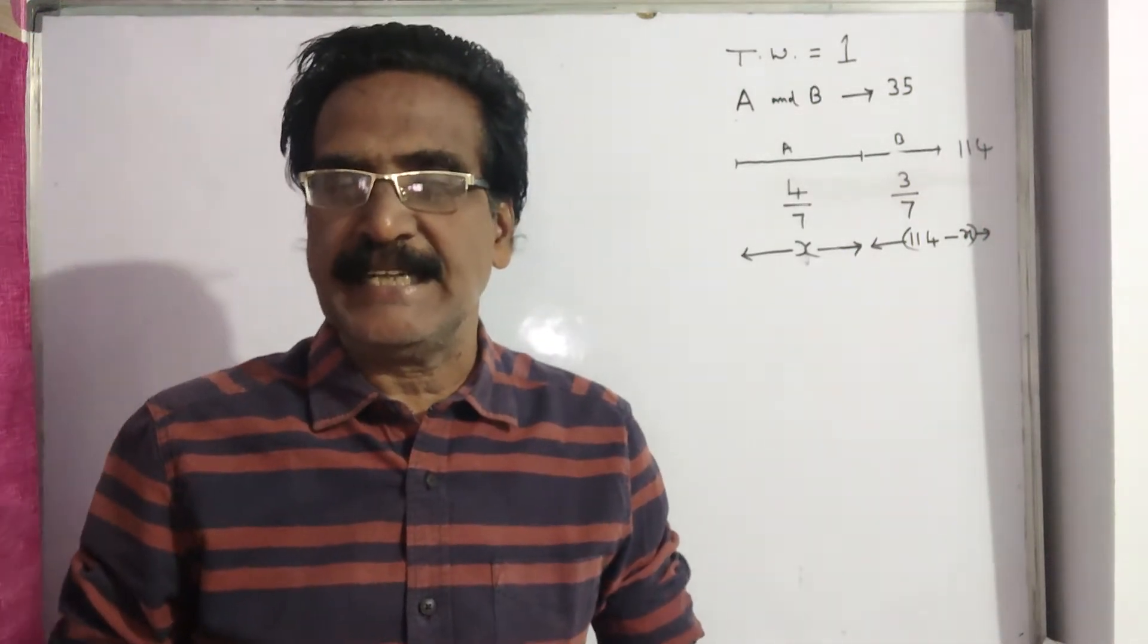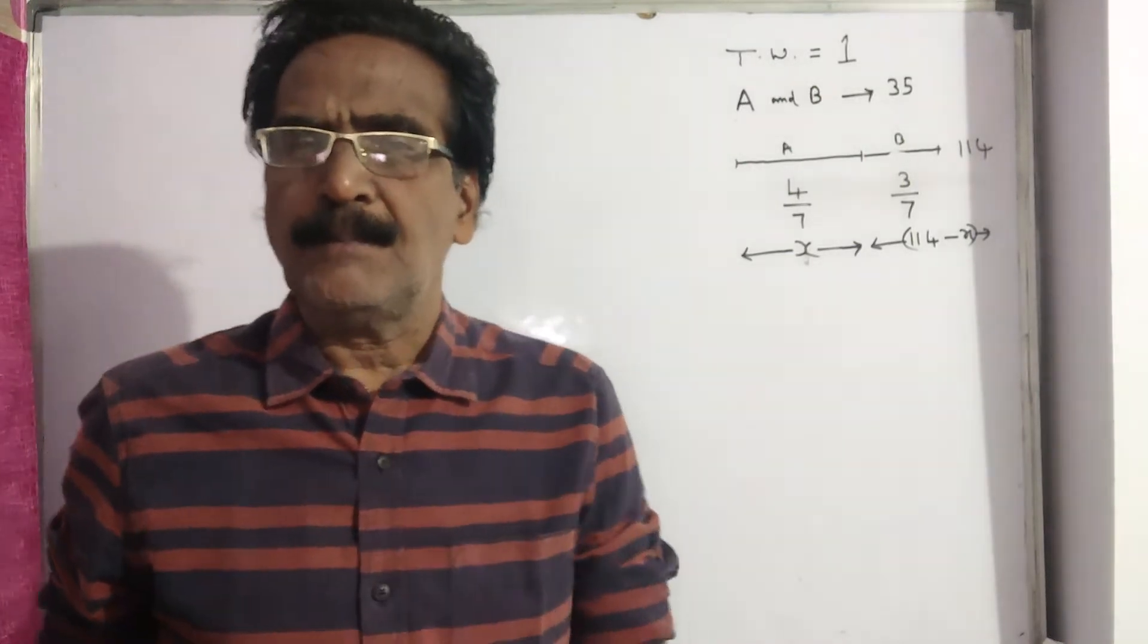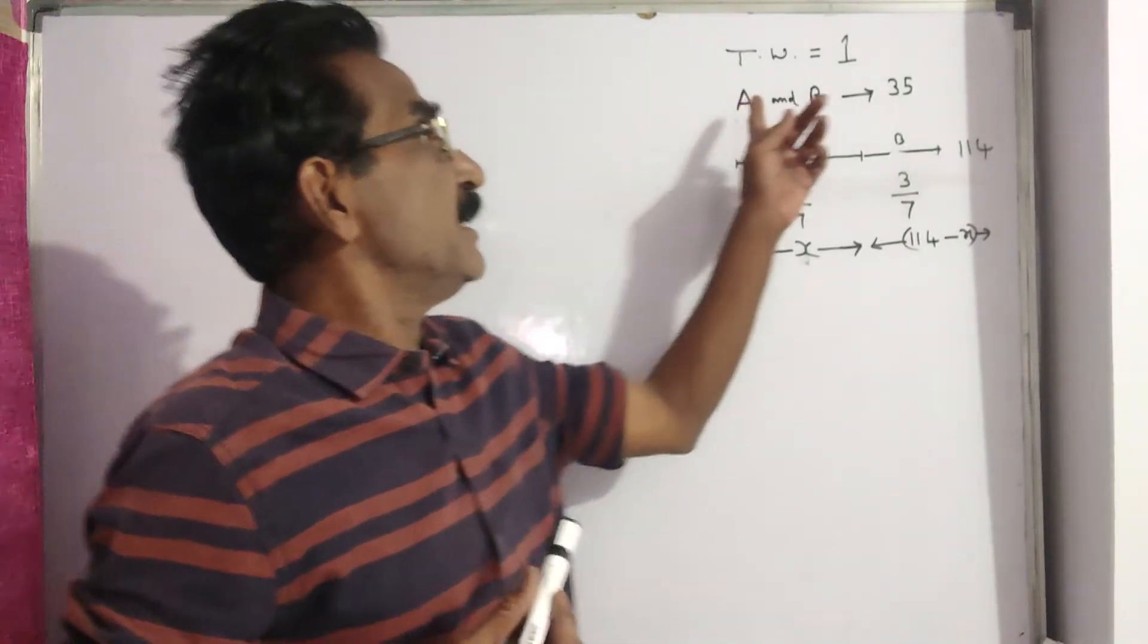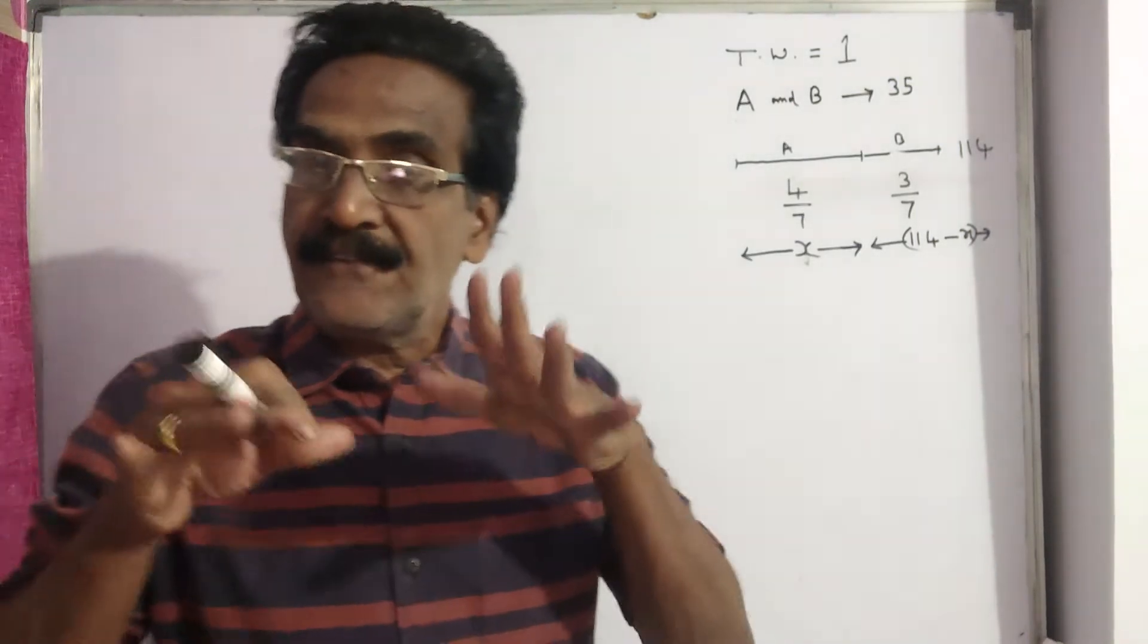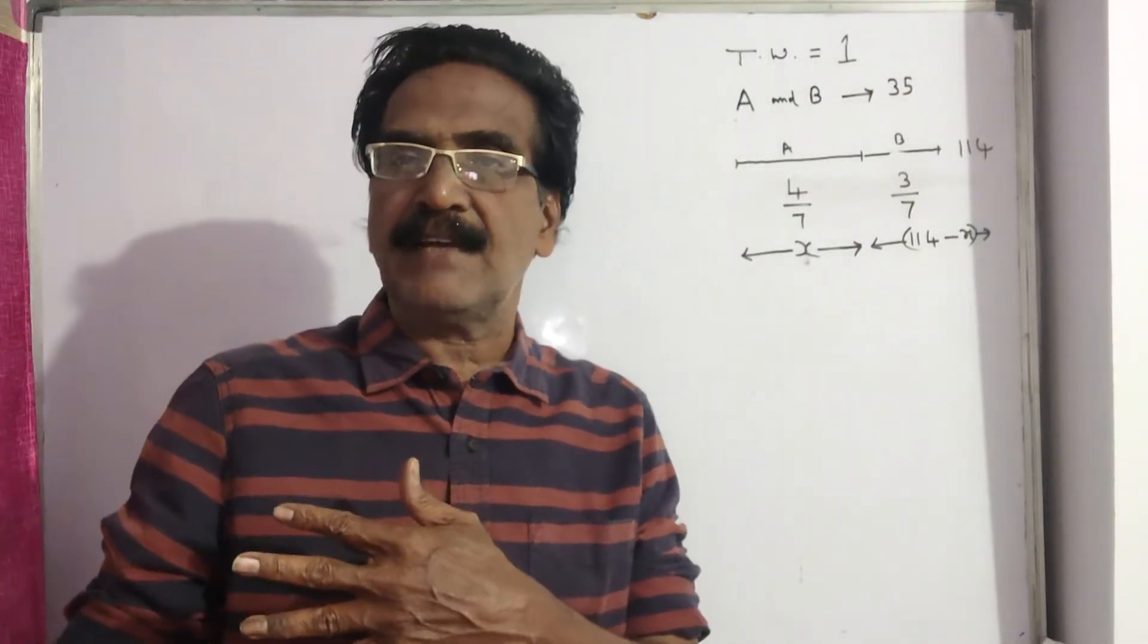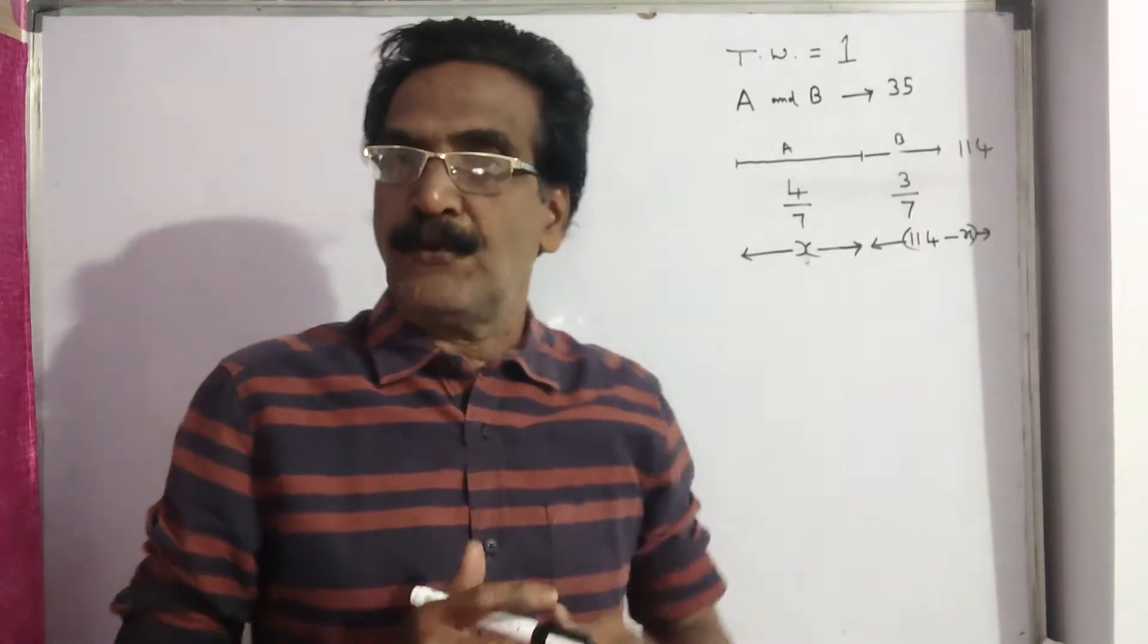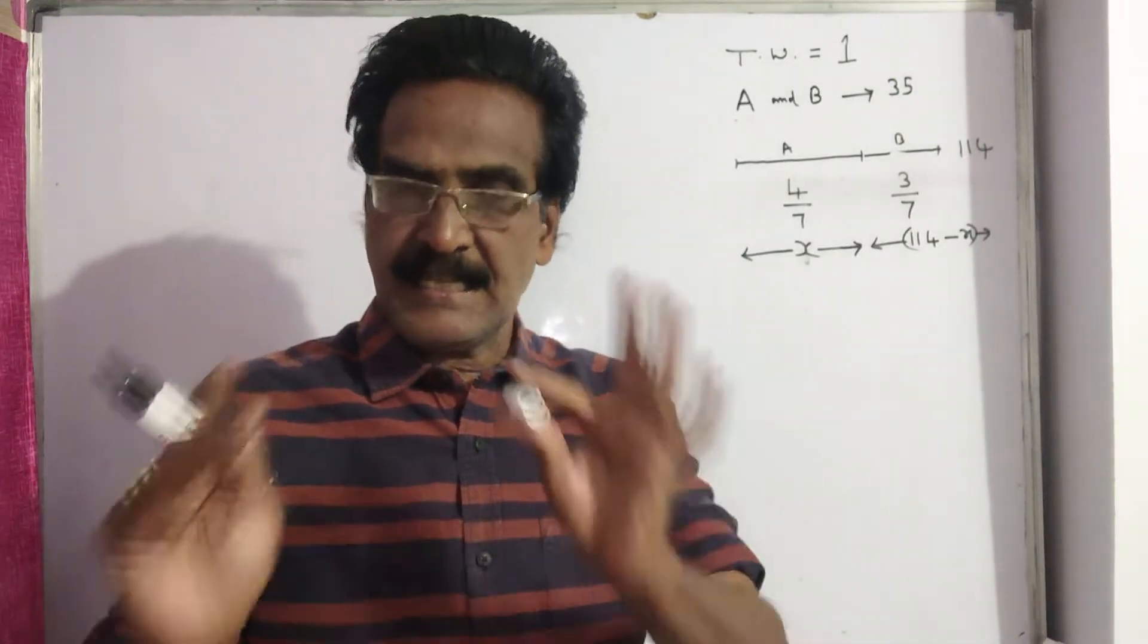Hi friends, good morning. Please look at the next problem. Friends, this is an important problem. Of course, a little bit difficult problem also. Not that difficult, little bit. See, A and B can complete a work in 35 days. If A completes 4 by 7 of the work and leaves the remaining work to B, then the total number of days to complete the work is 114. Then in how many days A alone can complete the work? That is the question.